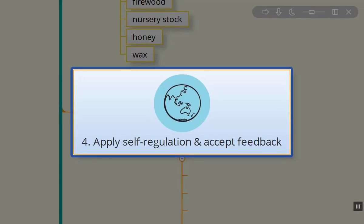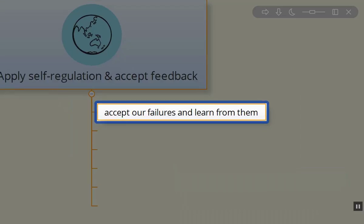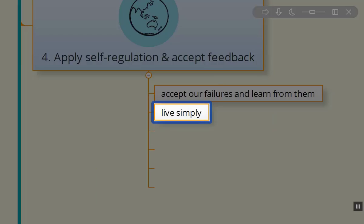Apply self-regulation and accept feedback, the fourth permaculture principle. Accept our failures and try to learn from them, analyze them, go back to them. Don't feel bad about the failures. Failures are actually good for us.